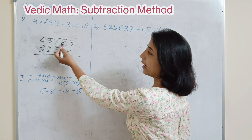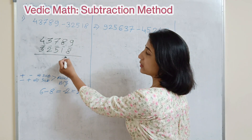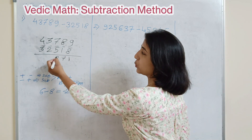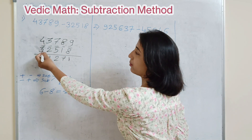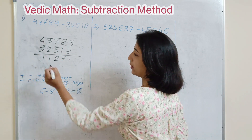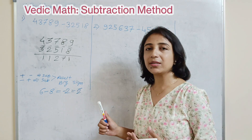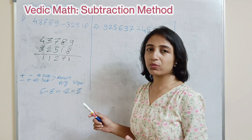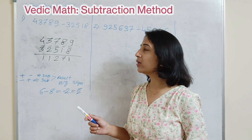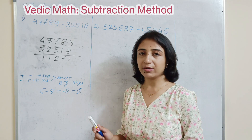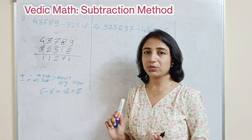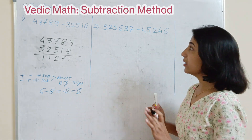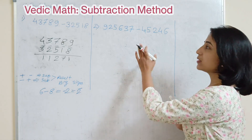So in Example 1: 9 minus 8 is 1, 8 minus 1 is 7, 7 minus 5 is 2, 3 minus 2 is 1, 4 minus 3 is 1. In this example there is no need to borrow any number or carry forward anywhere — it is a direct subtraction.